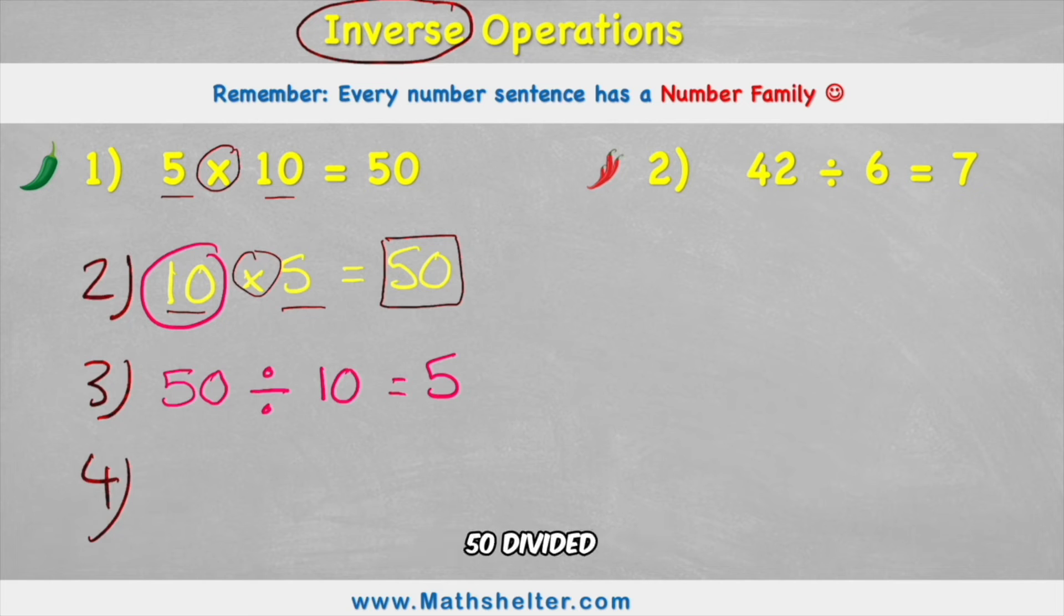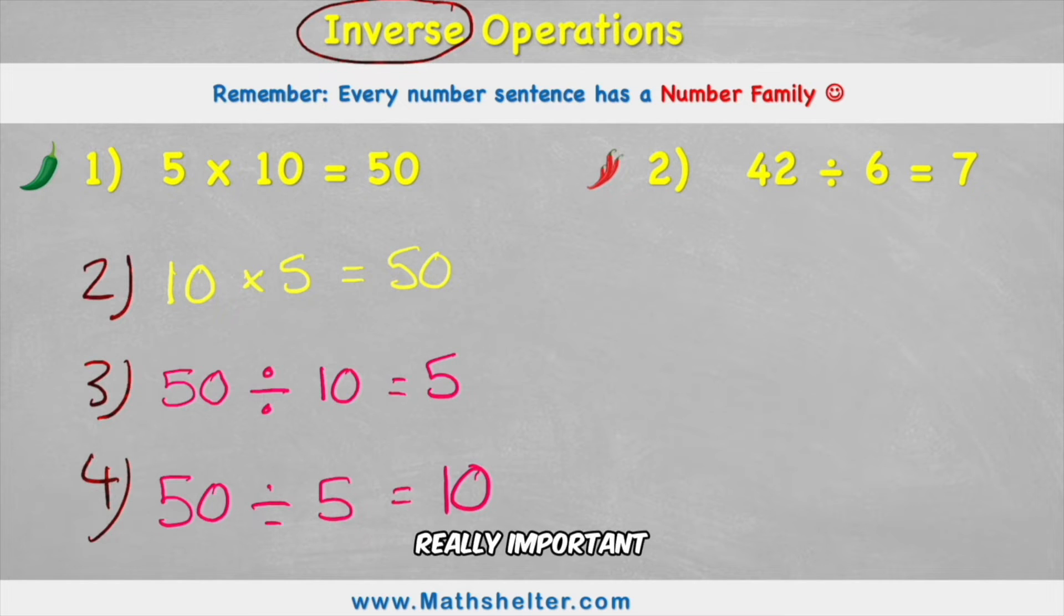And that's correct. 50 divided by 10 does equal 5. But there's another number sentence that I can still write. I could have 50 divided by 5 equals 10. But why is this really important to know?